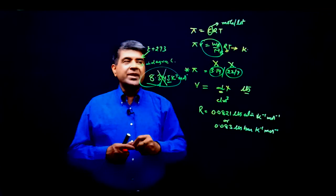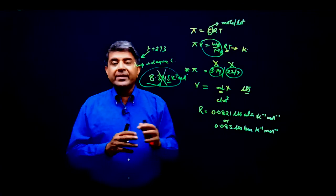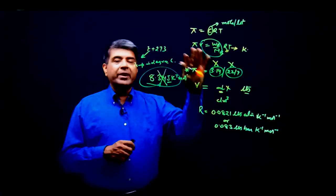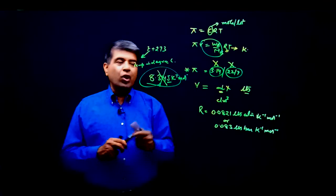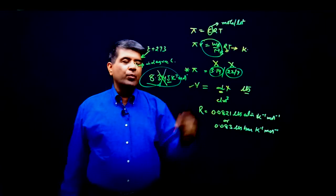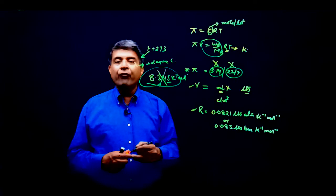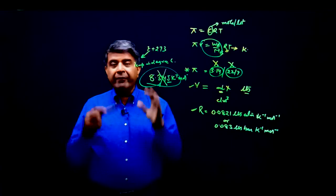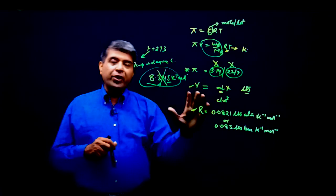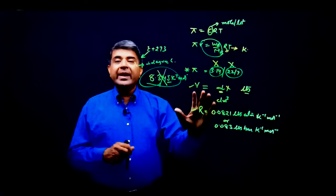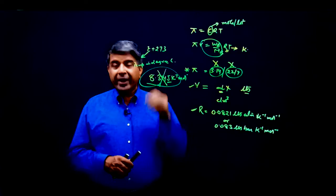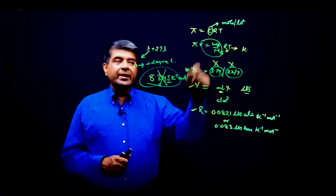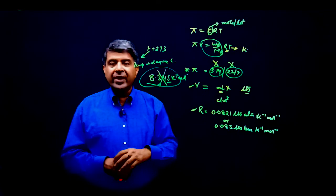So these are the three or four mistakes that I have seen over the years that students tend to commit with this formula. The most common one is volume and the value of R. These are the most common mistakes. Out of 100, I have seen 40 or 50 students are making these mistakes. So try to rectify your mistakes and try to remember these important things.